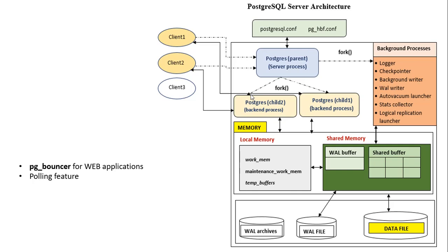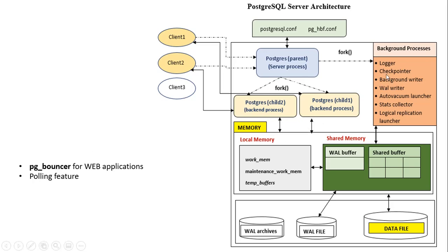In certain scenarios, such as web-based applications, there will be frequent connections and disconnections, which puts more stress on the PostgreSQL server process. To overcome this, we use a middleware called pg_bouncer, which handles frequent connections and disconnections. It provides a connection pooling feature to manage access between clients and the server.